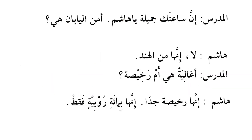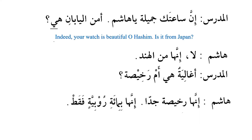Teacher: Inna sa'ataka jamilatun ya Hashimu — indeed your watch is beautiful, O Hashim. Aminal yabani hiya? Is it from Japan? Note that Arabic is lughatul hadf — the language of omission — so sometimes the subject or predicate is omitted. Sa'ah is feminine and mansoob. When used with inna, sa'ataka becomes ismu inna and jamilatun becomes khabaru inna.